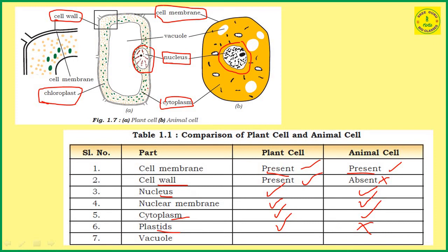Another important structure is the vacuole. Vacuoles are present in both plant cells and animal cells. But what is the difference? A big vacuole is present in the plant cell, while a small vacuole is present in animal cells. So vacuoles are present in both, but the size is different — vacuoles are larger in plant cells and smaller in animal cells.